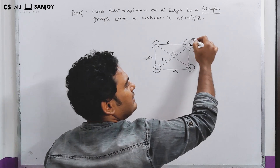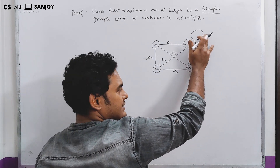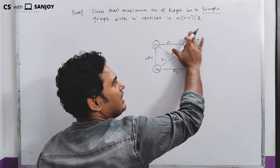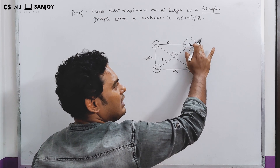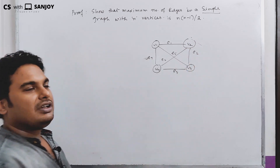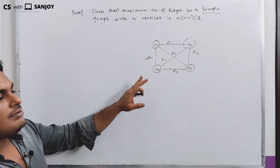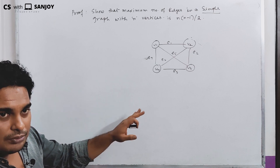A simple graph has no self-loops and no parallel edges. That is why the maximum edges are drawn in this way for a simple graph.